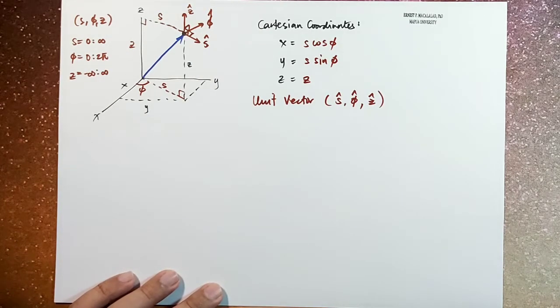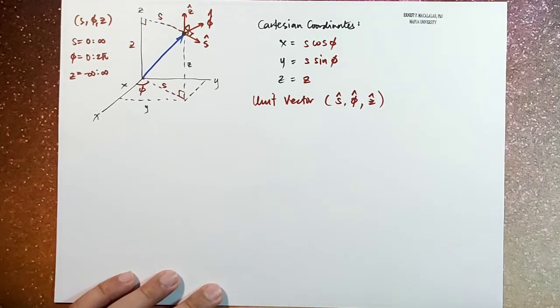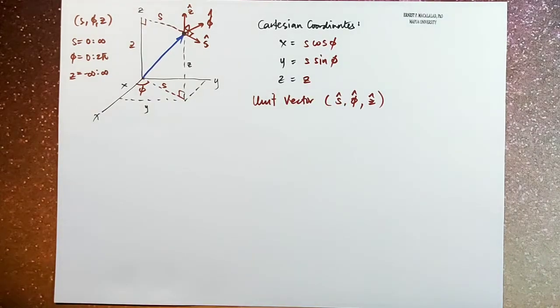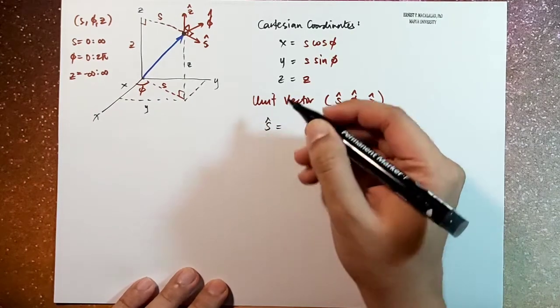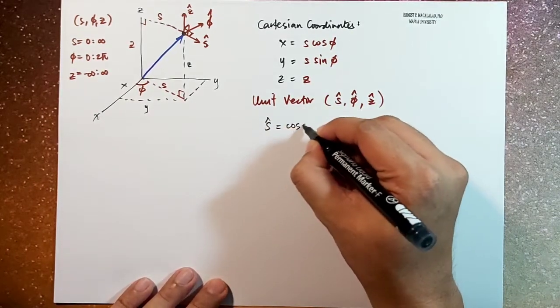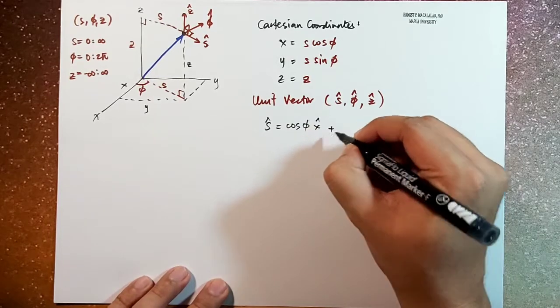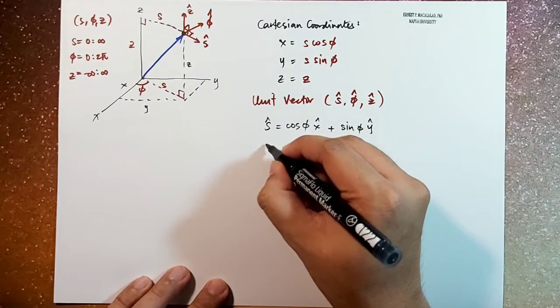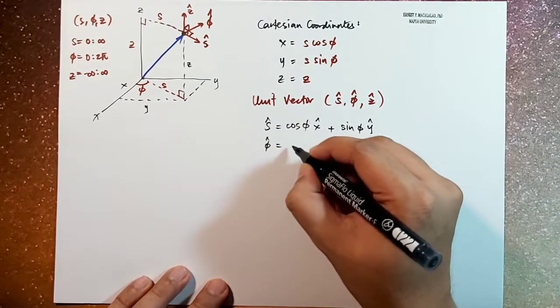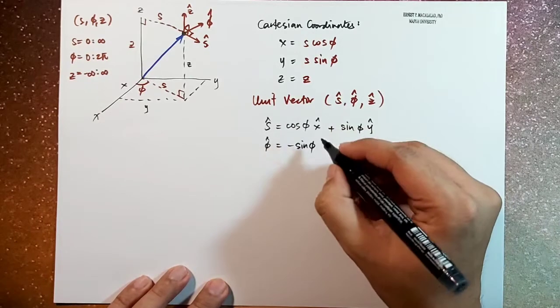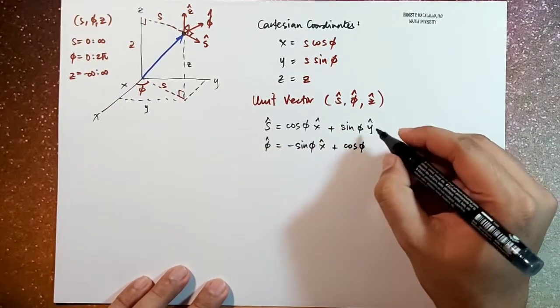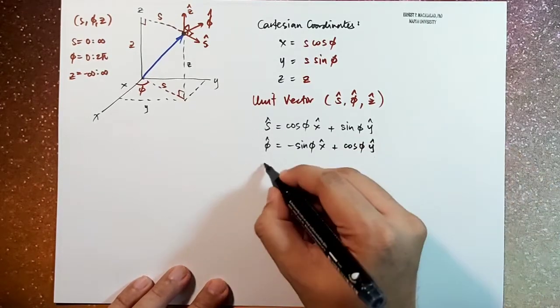And the relationship between x hat, y hat, and z hat with s hat, phi hat, and z hat are given by this. S hat is equal to cosine theta, x hat, plus sine theta, phi hat, a y hat. Phi hat is equal to negative sine theta, a sine phi, x hat, plus cosine phi, y hat.